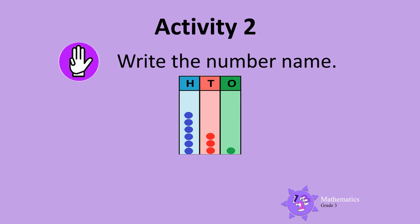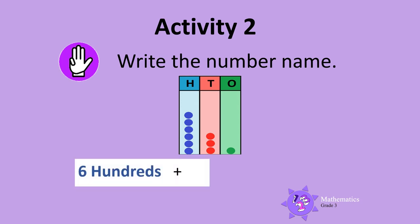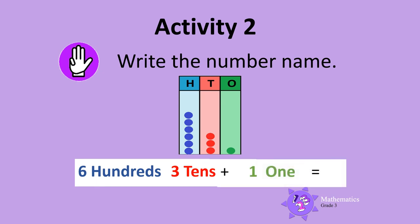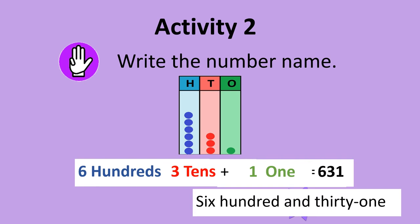Activity 2. This time, let's write the number name shown on this abacus. There are 6 counters in the hundreds column, so there are 6 hundreds. There are 3 counters in the tens column, so there are 3 tens. And there is only 1 counter in the ones column, so there is 1 one. The number shown on the abacus is 631, so we write the number name six hundred and thirty-one.